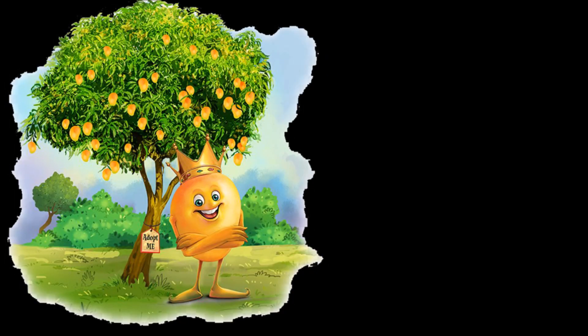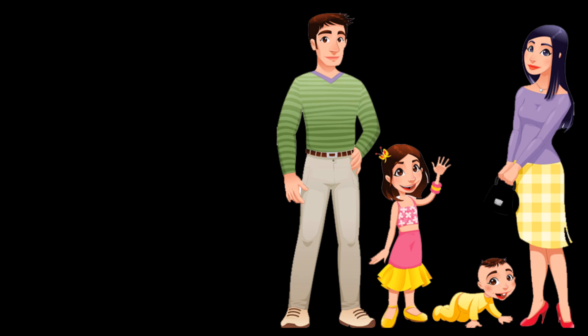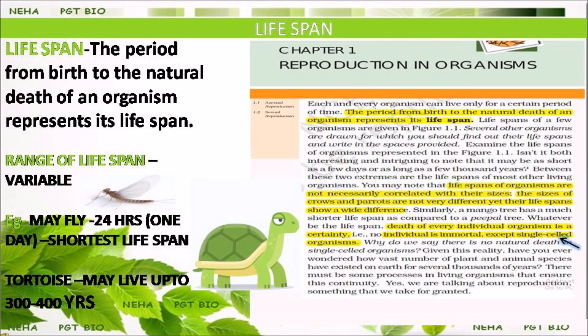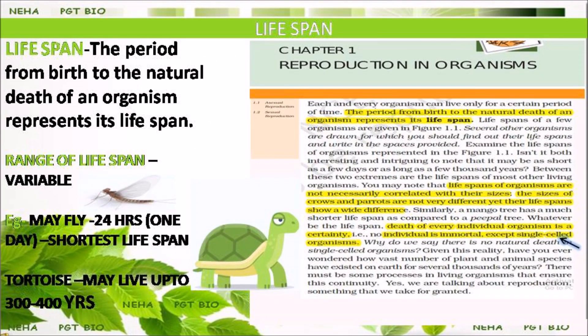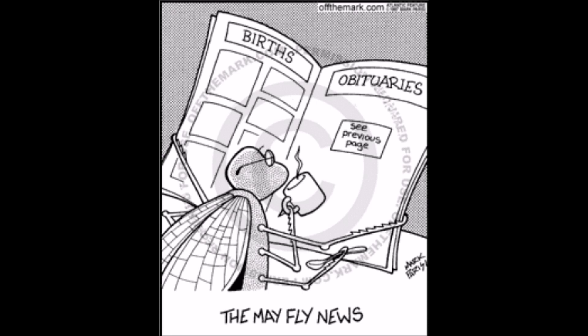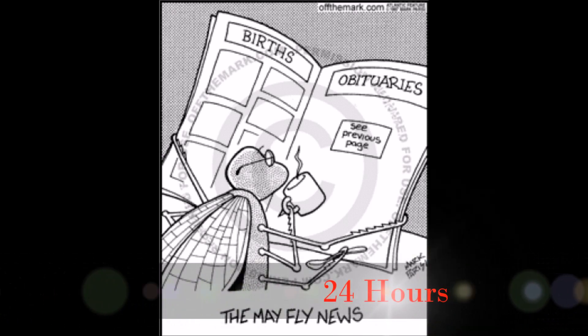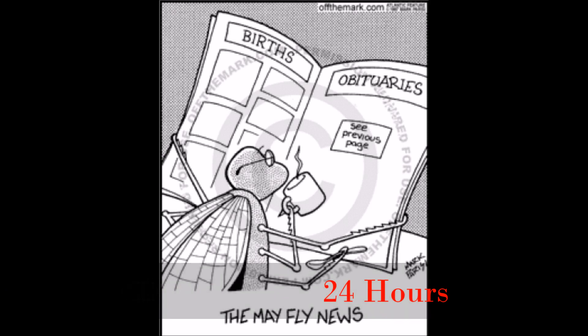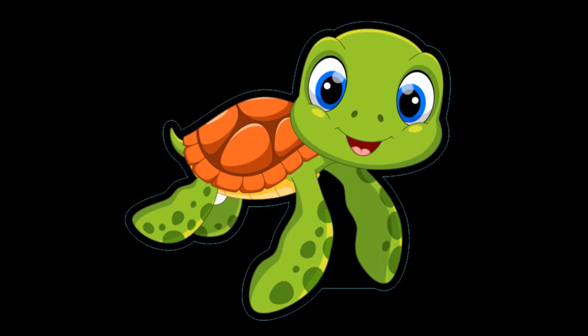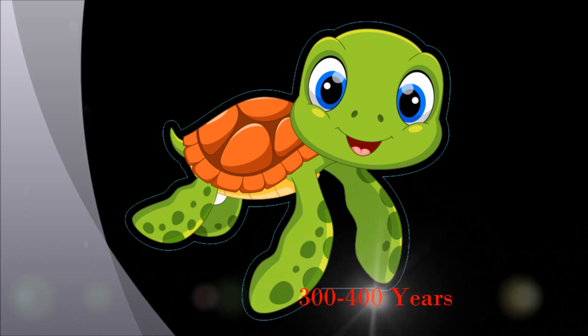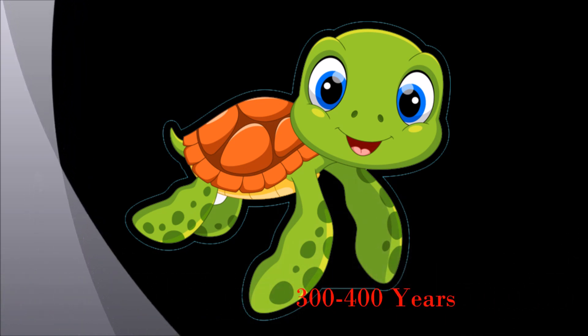This ensures survival of the species generation after generation. Lifespan is the period from birth to the natural death of an organism. We have a wide range of lifespans — the shortest lifespan is of the mayfly, which can live up to 24 hours. Among the longest, the tortoise can survive up to 300 to 400 years.